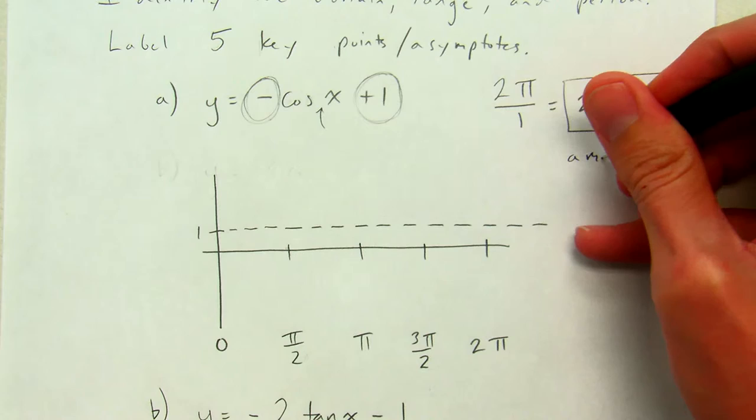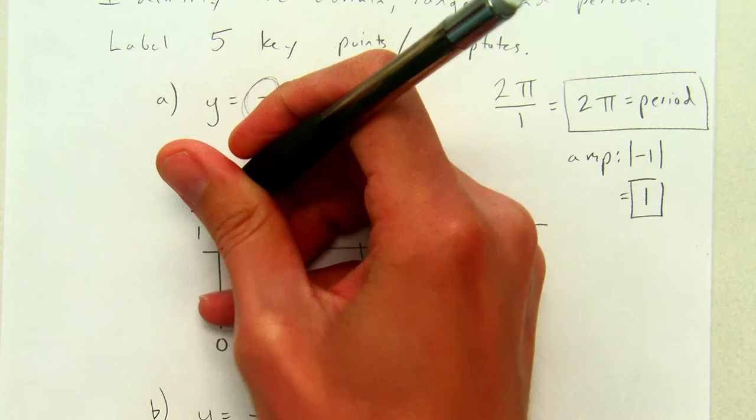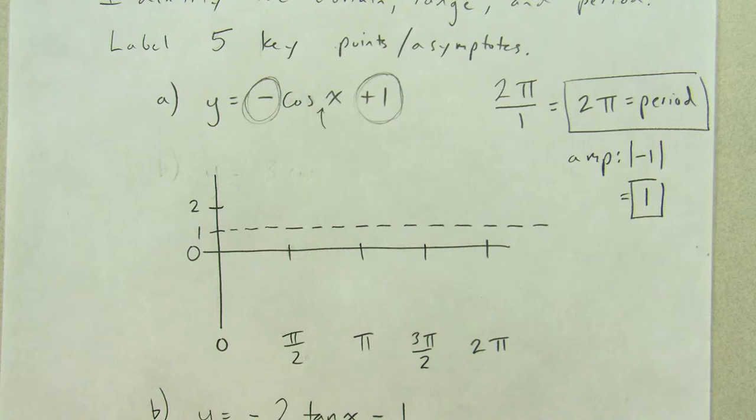Now, the amplitude is still the absolute value of a. Amplitude is the absolute value of a. In this case, a is negative one. The absolute value of negative one is one. So, there's the amplitude. That means I'm going to go up one and down one from the midline. That's how far up and down the wave will go.